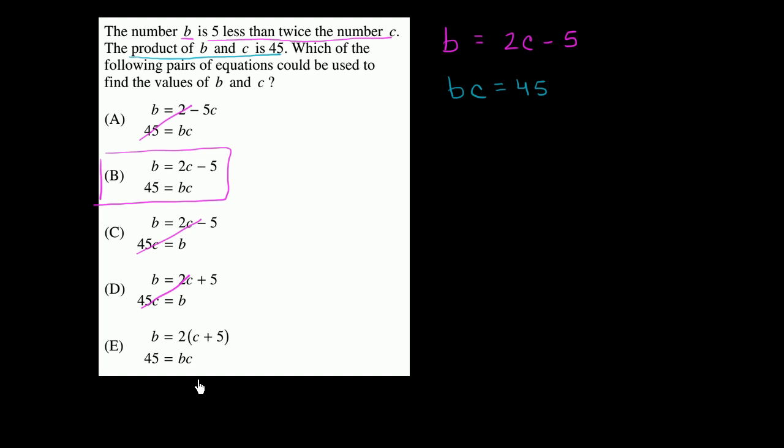And we can verify that this last one isn't going to work. b is equal to 2 times c plus 5. Well, if we distribute the 2, that's like saying that b is equal to 2c plus 10, which is clearly different than this first equation that I wrote up here. So we can knock that out as well.